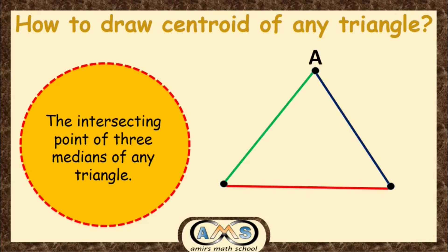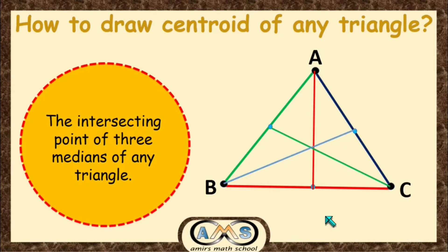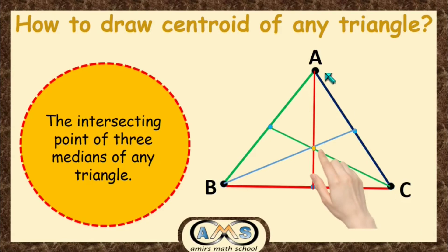This is our triangle ABC. The midpoint of AC is this point, the midpoint of AB is this point, and the midpoint of BC is this point. Now, joining each vertex to the midpoint of the opposite side — line one, two, and three. These three lines intersect at this yellow point. This point is our centroid for triangle ABC.